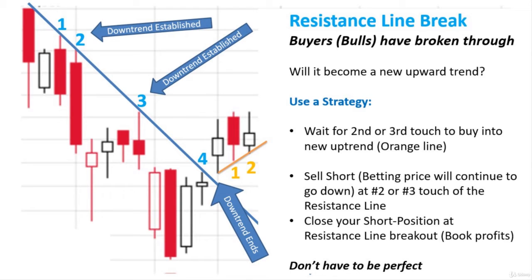Another thing you can do is selling short — basically you're betting the price will continue to go down at the number two or number three touch of the resistance line. You can be selling short at those periods, and then you close your short position once it breaks through and there's a resistance line breakout, booking your profits at that point. The idea is you think it's going to go down, you're investing in a way that you're betting on it to go down. It does go down, and then once it breaks that line, you're getting out. For most people who aren't selling short, they're really doing that first strategy of waiting for the second or third touch to buy into a new trend.